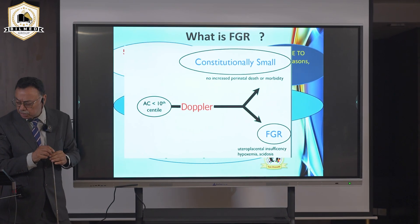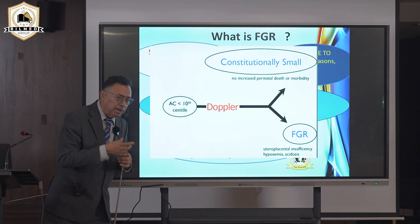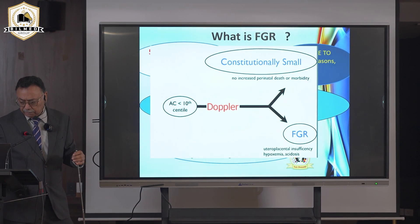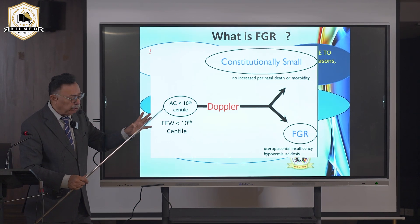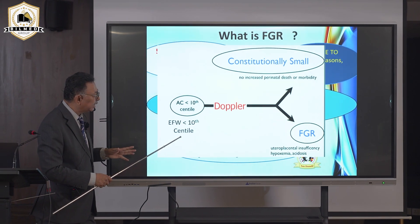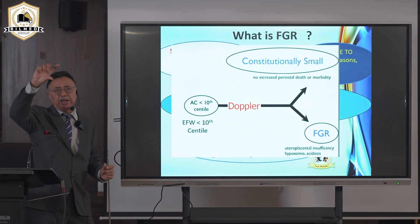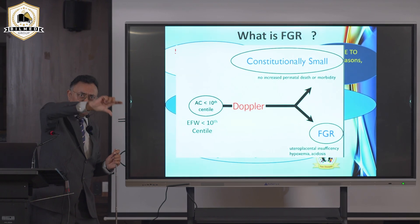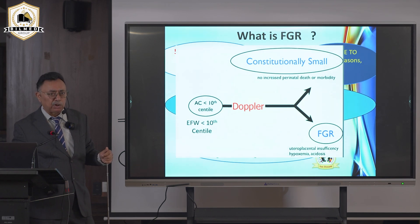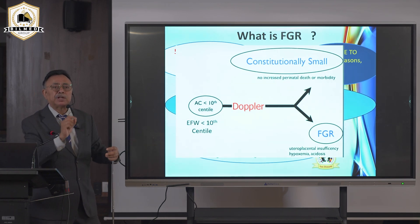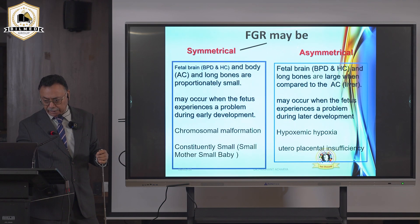That is why Doppler is so important. If the Doppler is abnormal, it indicates uteroplacental insufficiency, which may lead to hypoxia, hypoxemia, acidosis, and fetal death. To assess weight, use less than the 10th centile on growth curves. Growth charts are easy to find — type 'fetal growth chart' on Google, print it, and fill it in on the antenatal card.